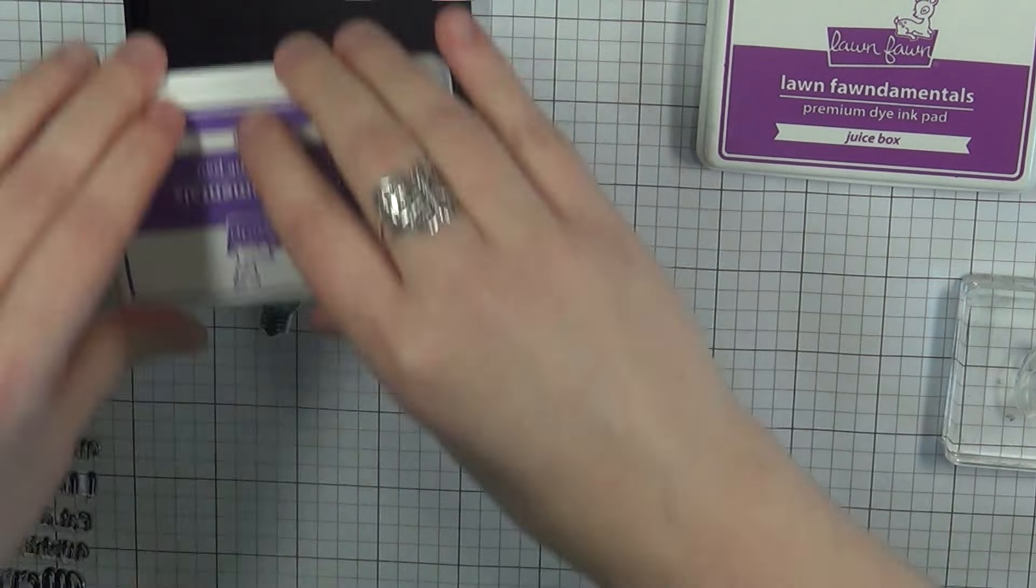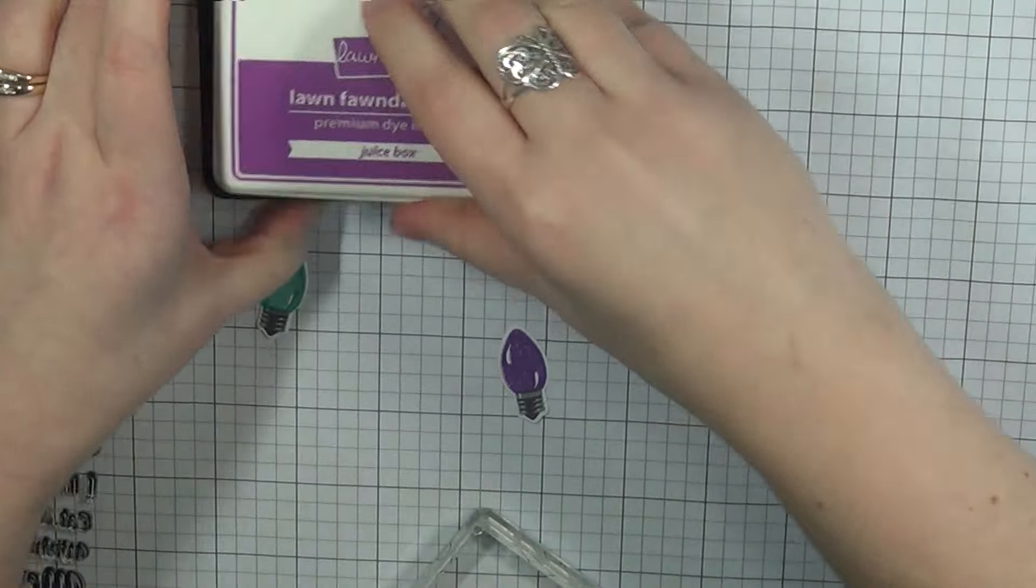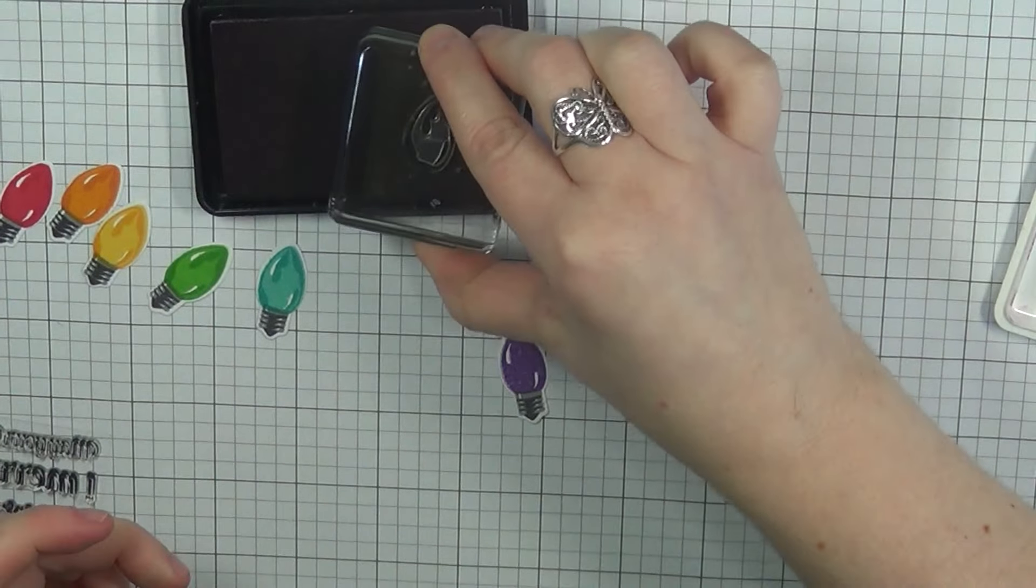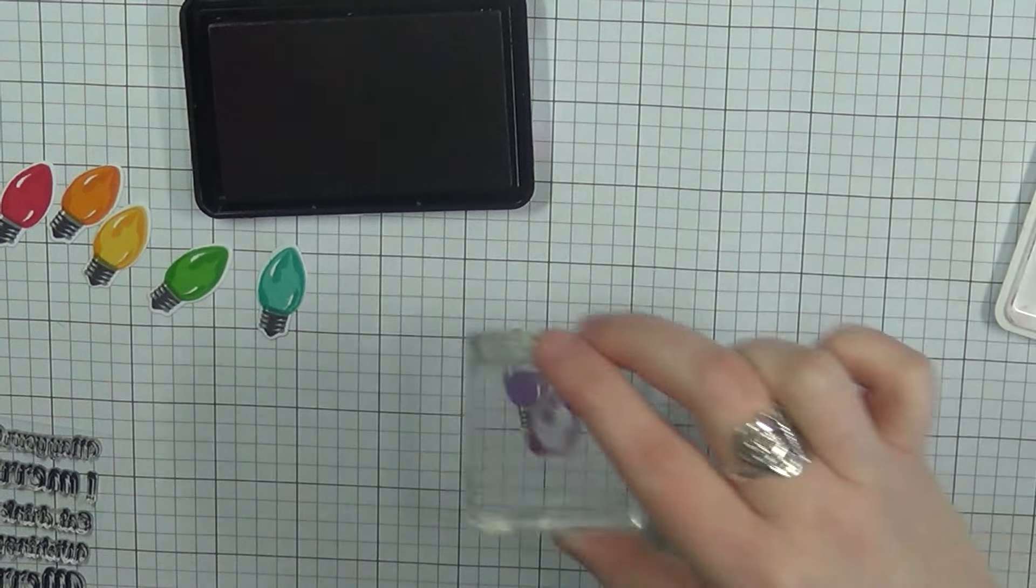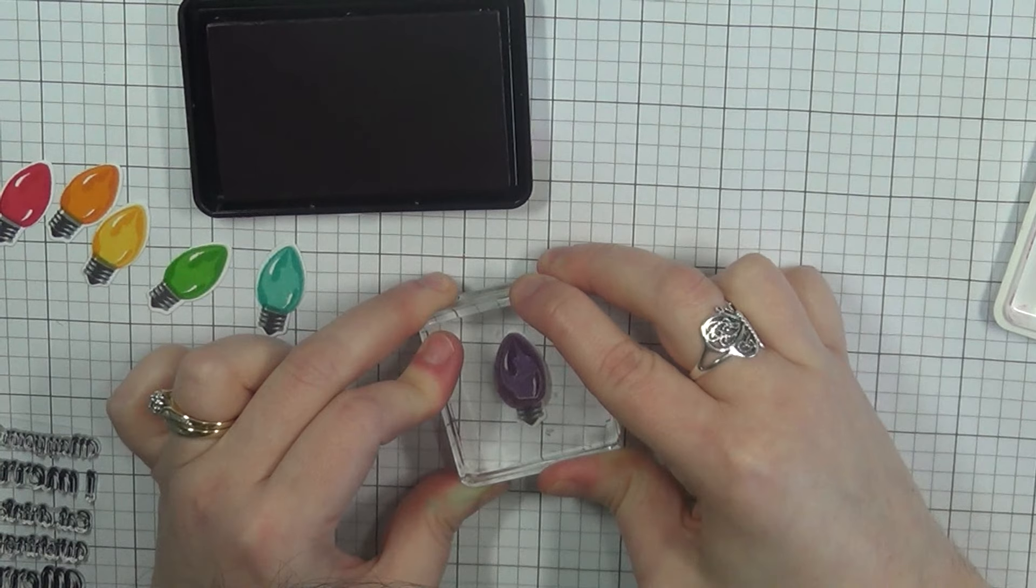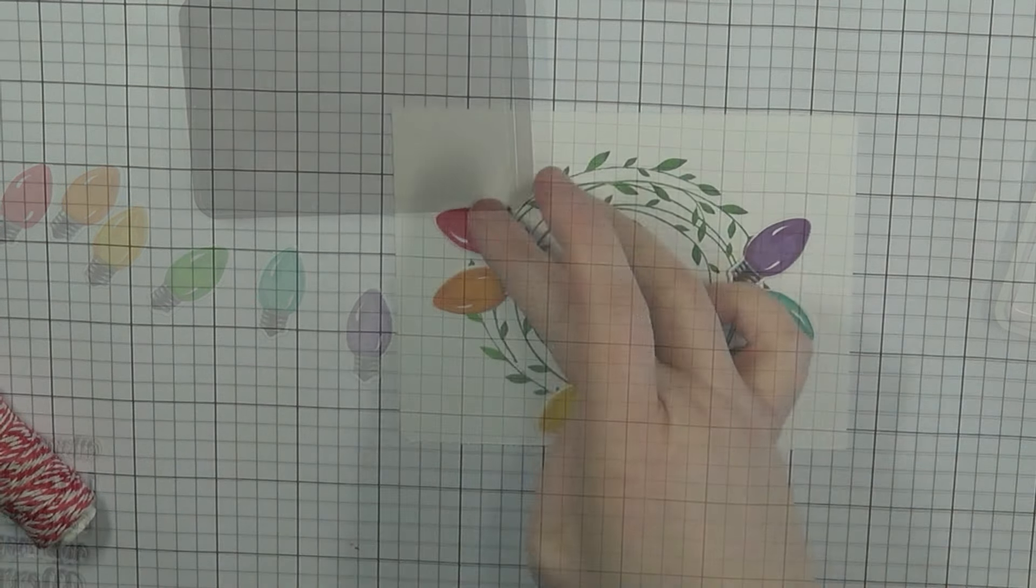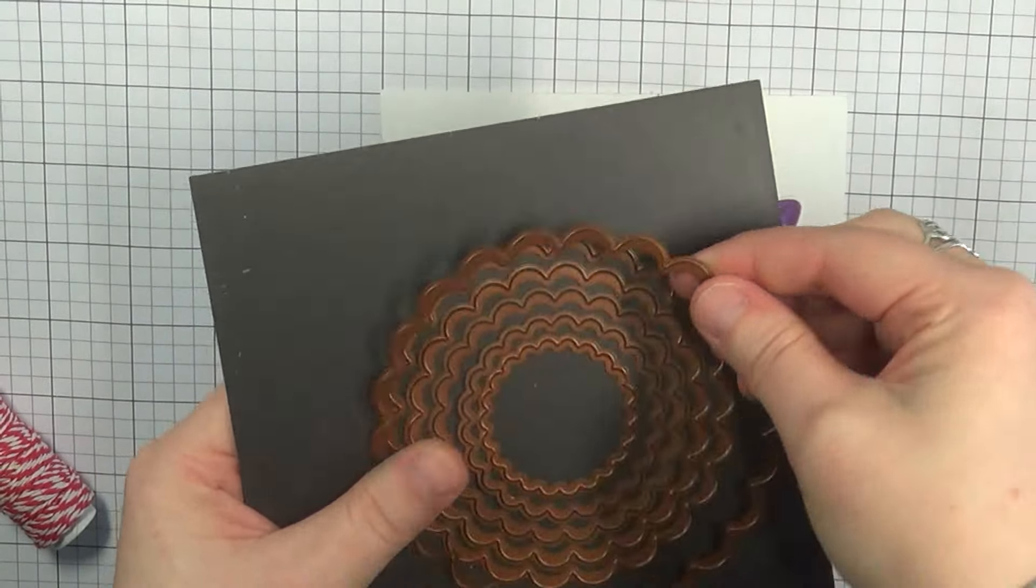So I've gone ahead and fast forwarded just a little bit here so you didn't have to see all the stamping because that would have taken a long time. You see all the bulbs that I have got them all stamped out there and now I'm taking my last few inks here and I'm doing the purple bulb and I'm kind of seeing how I'm going to assemble all of these together.